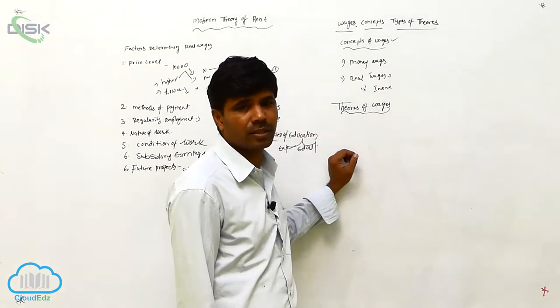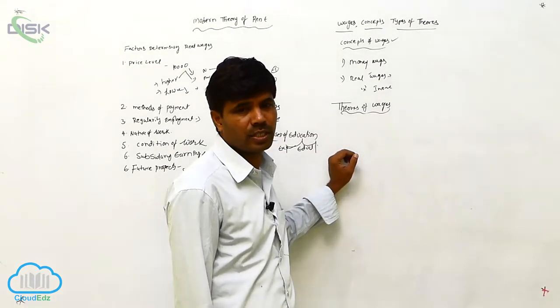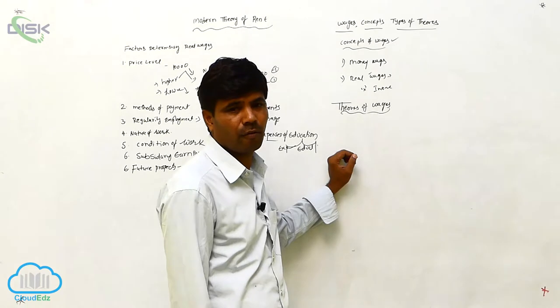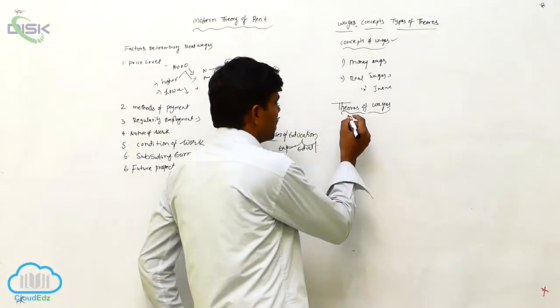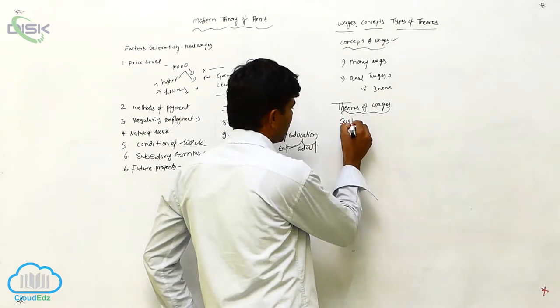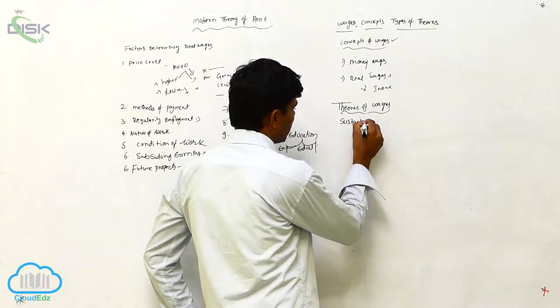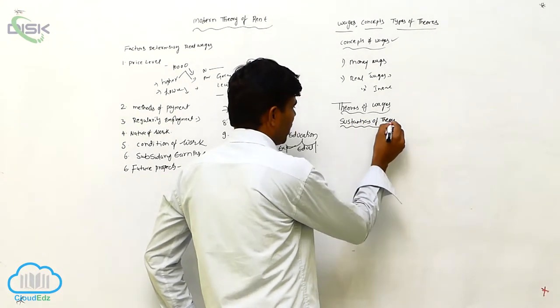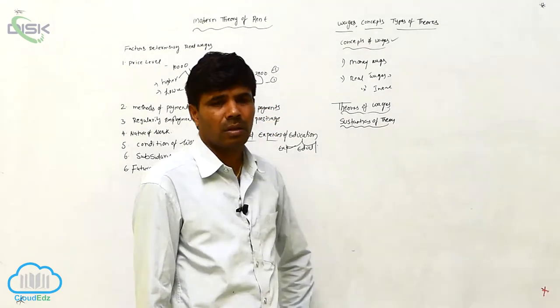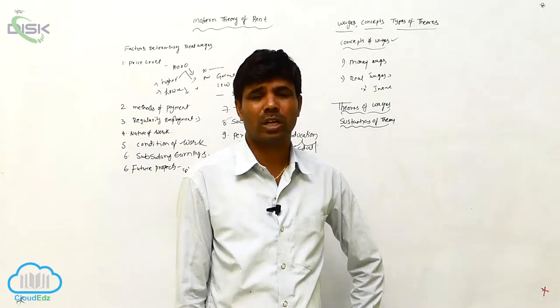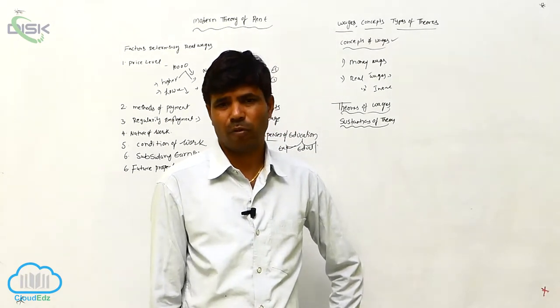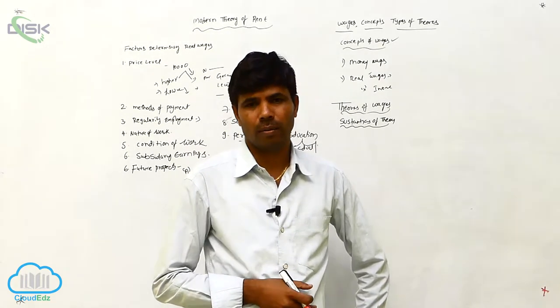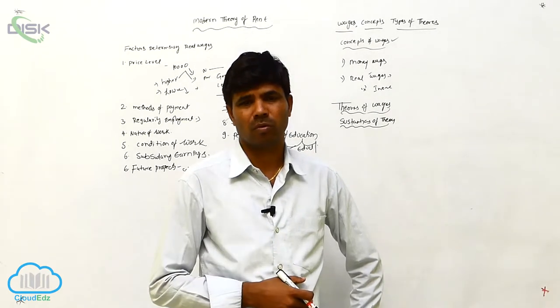From the theorems of wages, first is in the 19th century, French economics developed the subsistence theory. According to this theory, the worker or laborer receives wages from the owner, and the particular wages should be sufficient to fulfill their minimum wants.